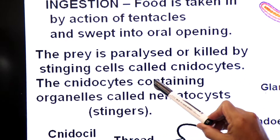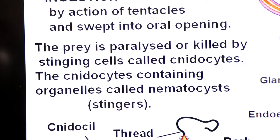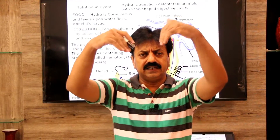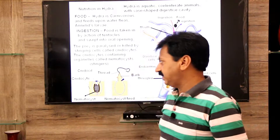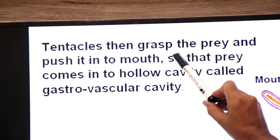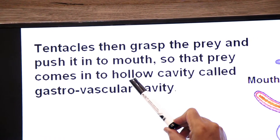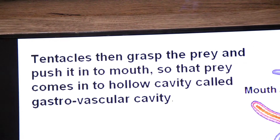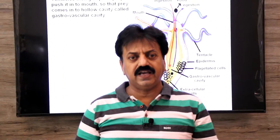The prey is paralyzed or killed by the stinging cells called nidocytes, which contain organelles called nematocysts, also known as stingers. After the prey is paralyzed, the tentacles bend and push the food through the mouth into the gastrovascular cavity. Remember: the gastrovascular cavity not only digests but also distributes the food.